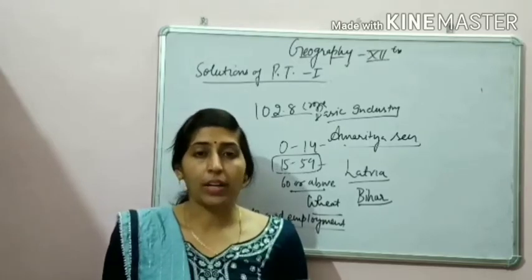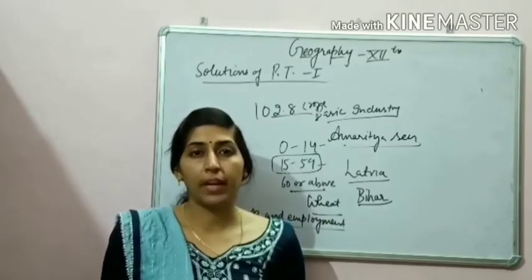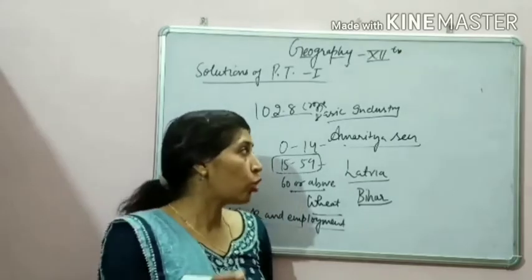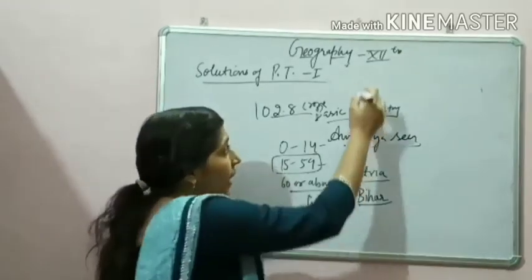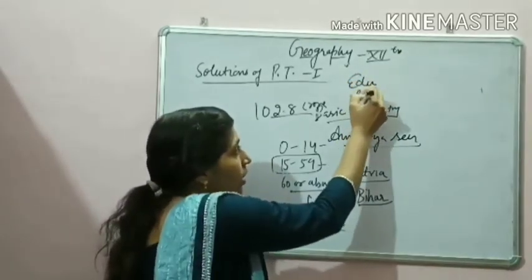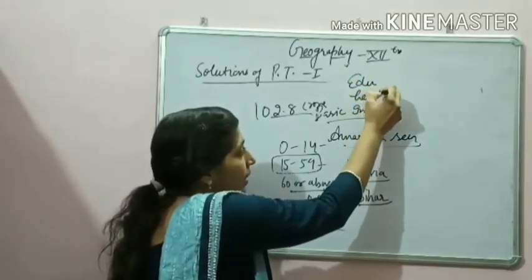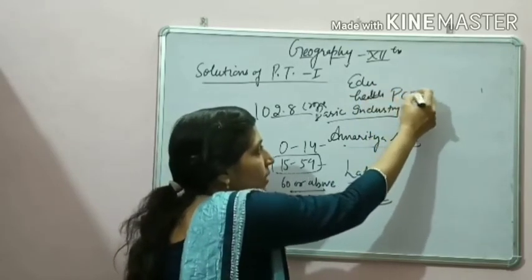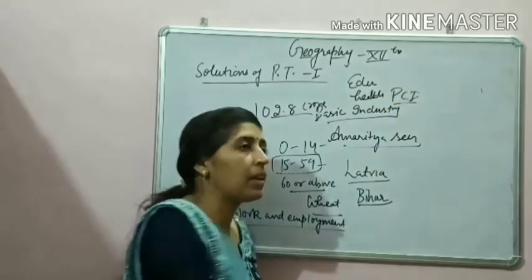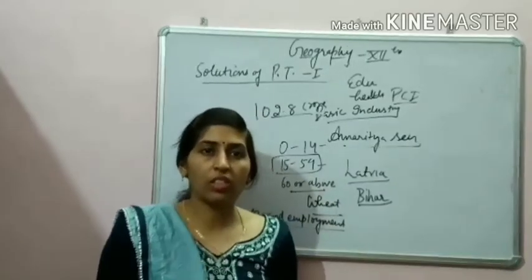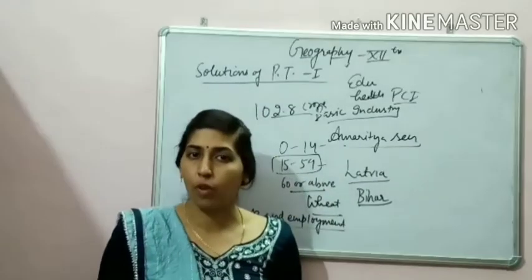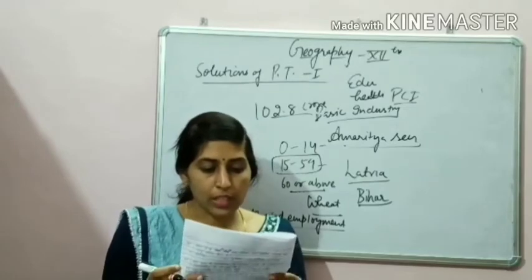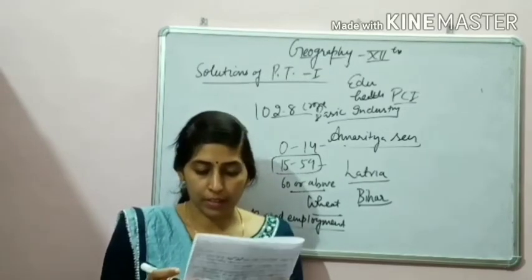The next question: what are the three main factors responsible for human development? The three factors are education, health, and resources — you can also write per capita income. These three factors are responsible for human development.